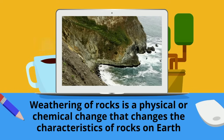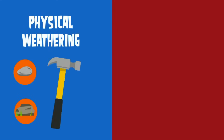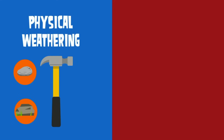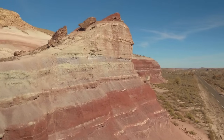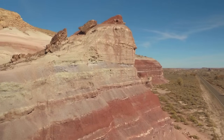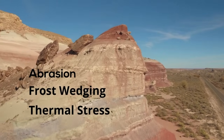There are two major types: physical weathering, which involves breaking rocks into smaller fragments caused by environmental factors, and chemical weathering, which involves rocks being changed into new substances or minerals chemically. Let's look at three major types of physical weathering: abrasion, frost wedging, and thermal stress.